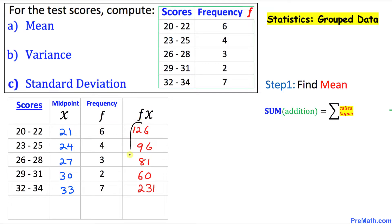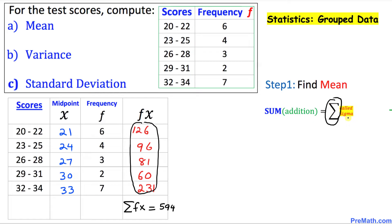Finally, we add up all the values in this fourth column. We call that sigma, so sigma of f times x equals 594. Sigma means sum or addition. Likewise, we add the frequencies: sigma of f equals 22.